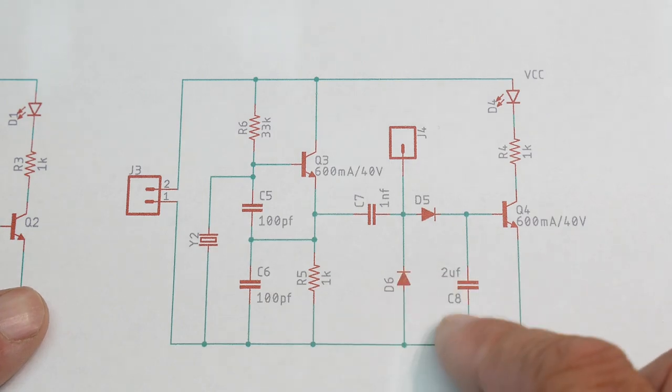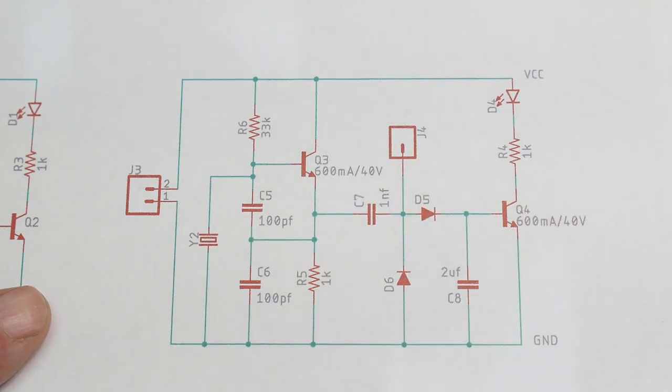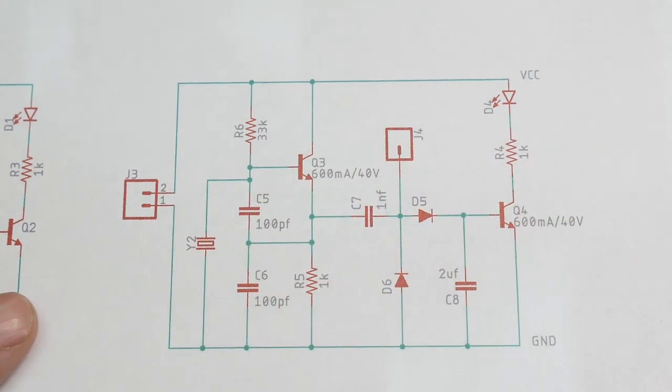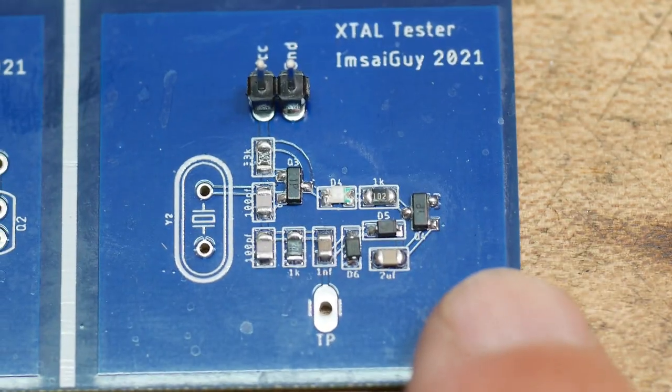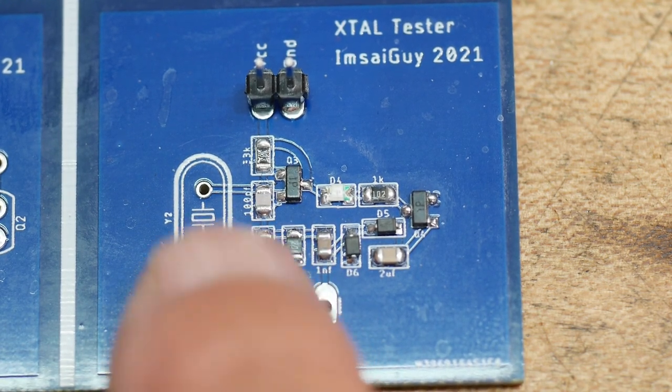Yeah, other than that everything is fine here. Everything is 0805 component package sizes. Let's take a closer look at the surface mount side because I think that's interesting.